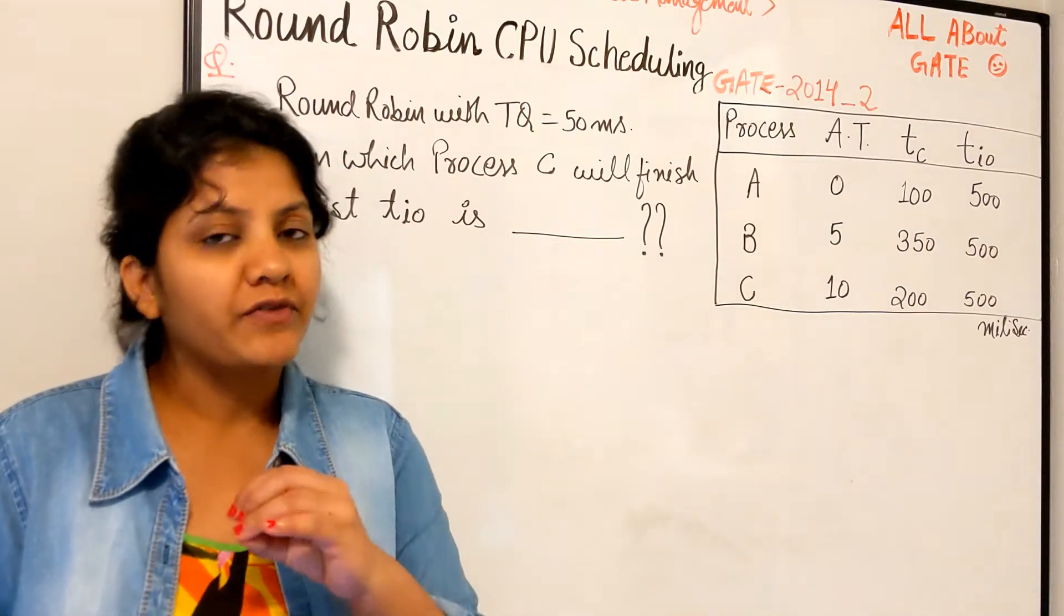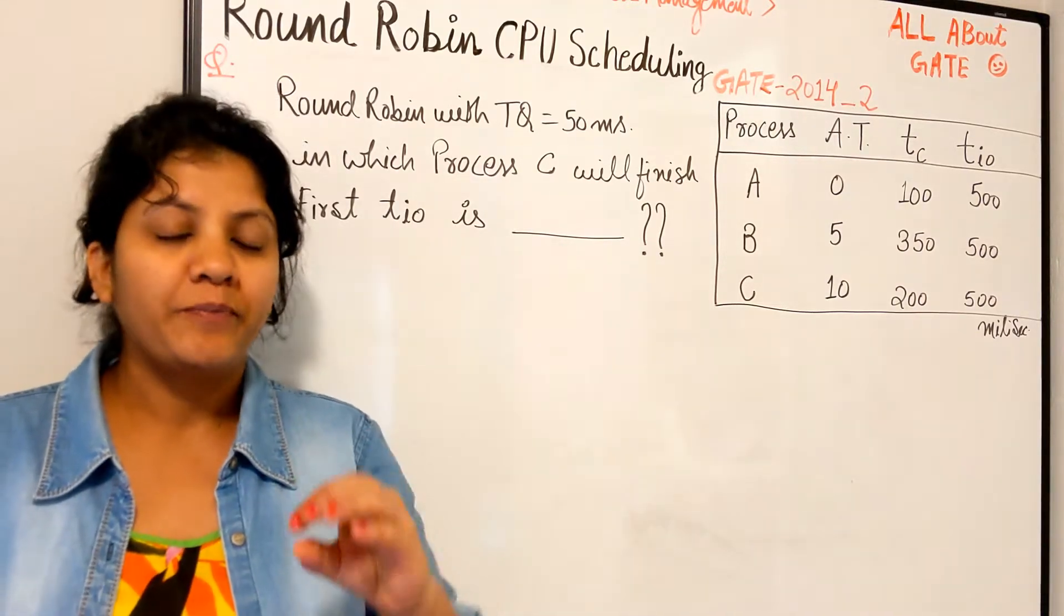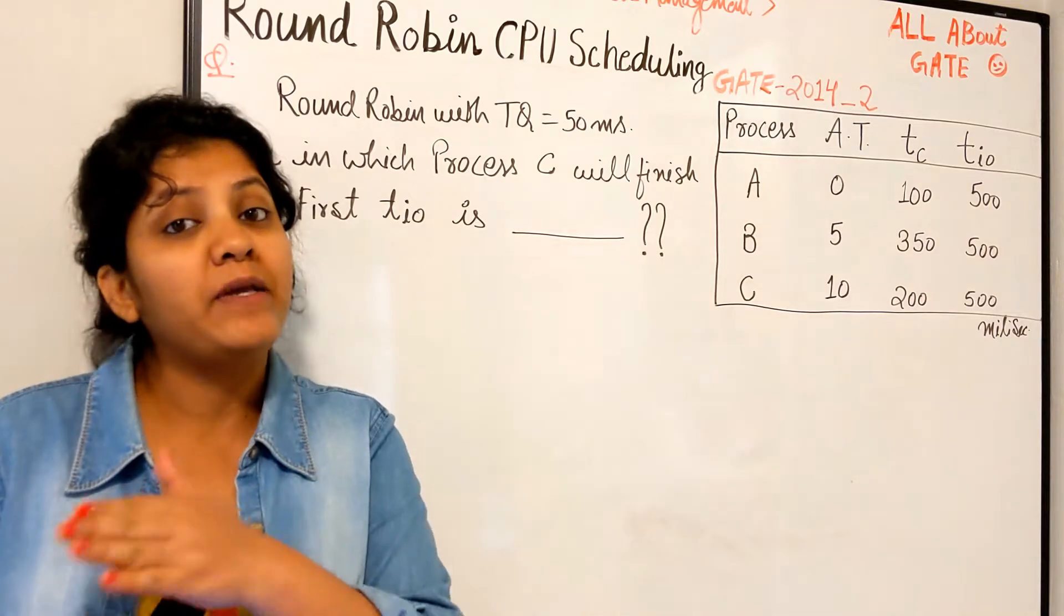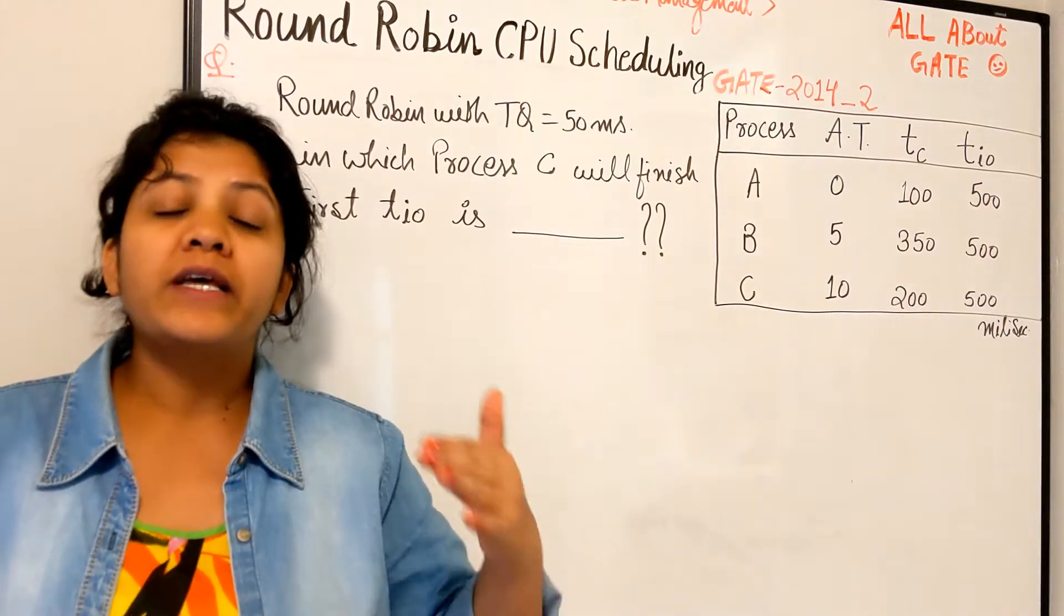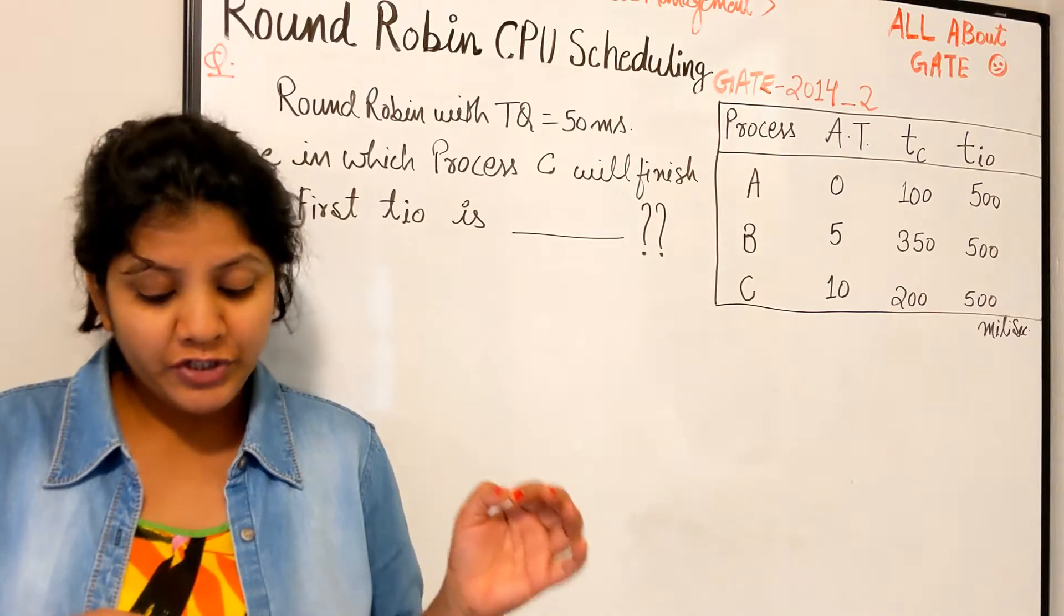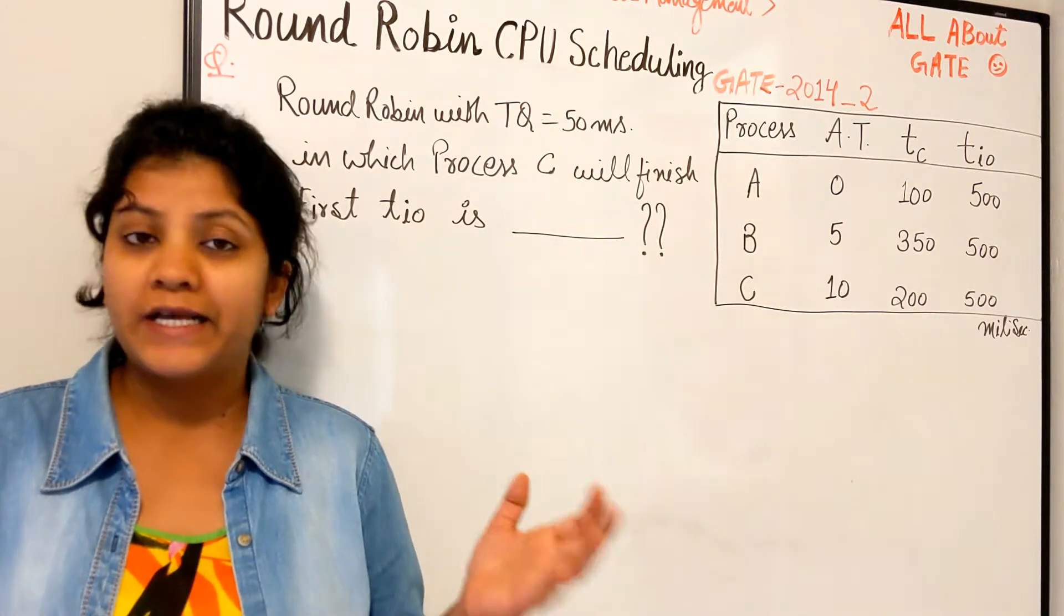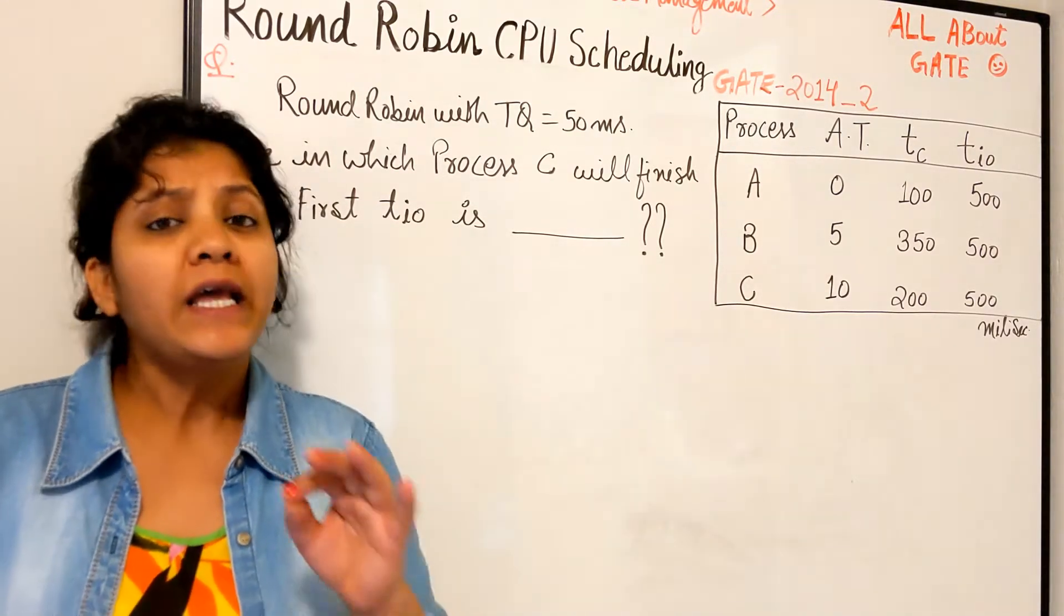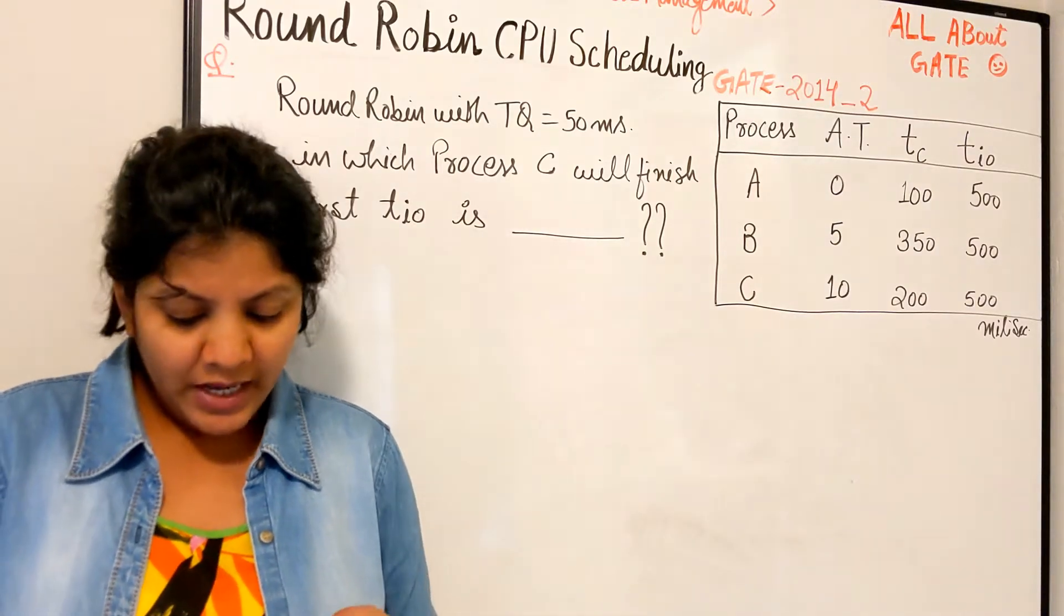We have sufficient input-output devices, so that means all three processes ABC can perform their IO operations simultaneously. Also, the scheduling overhead of the OS is negligible, so you don't have to consider any context switching.